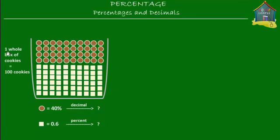What we've got is one whole box of assorted cookies, and they're 100 in number. Now some of the cookies are round and the rest are square. The round cookies are 40% of the whole box of cookies, and the square cookies are 0.6 of the whole box of cookies.